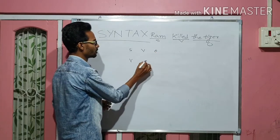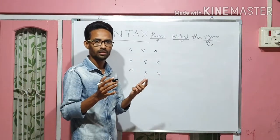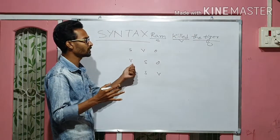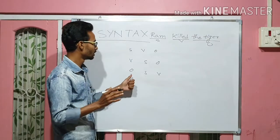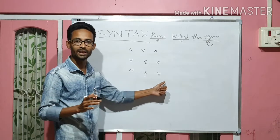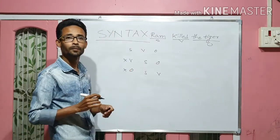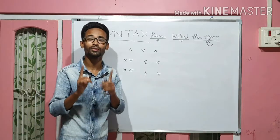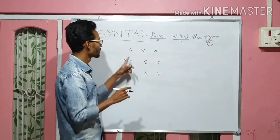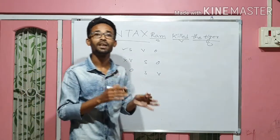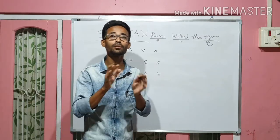Consider VSO order. Can we make it OSV? If VSO gives us 'Killed Ram the tiger' — the meaning is wrong, the sentence is wrong. If OSV gives us 'The tiger Ram killed' — the meaning is unclear, the sentence is wrong. That means these are not possible in English. That is why the word order of English is called rigid — R-I-G-I-D. Only one word order is applicable or allowed.